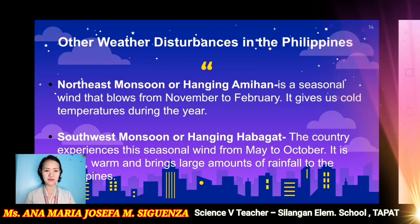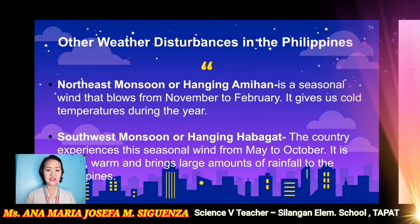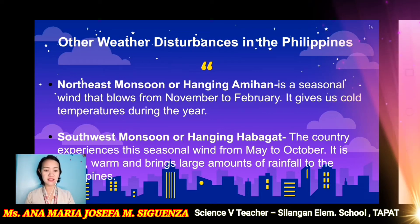The next one is the southwest monsoon or the hanging habagat. The country experiences this seasonal wind from May to October. It is moist and warm, and brings large amounts of rainfall to the Philippines. That is why when May or June arrives, we are already experiencing heavy rains — that is the start of the rainy season in the Philippines.